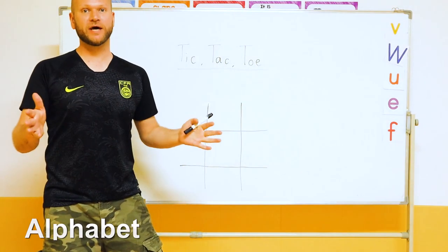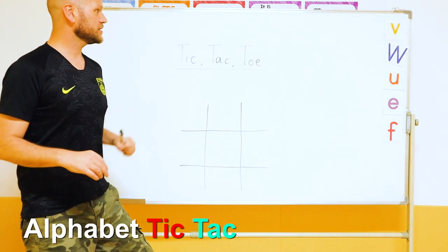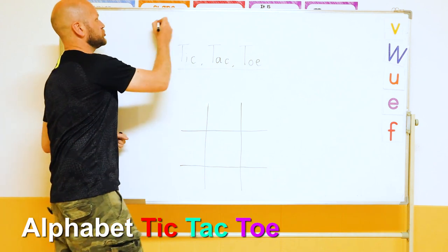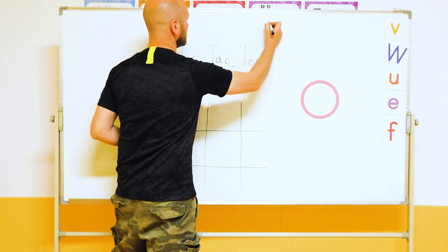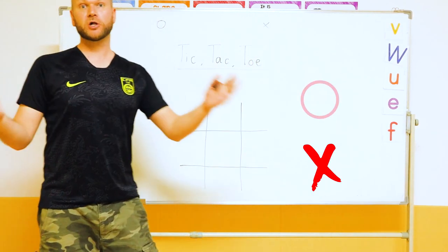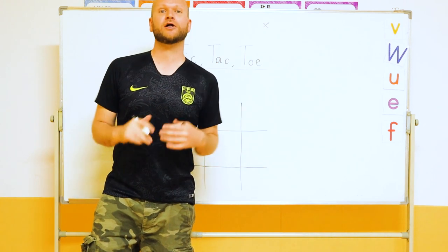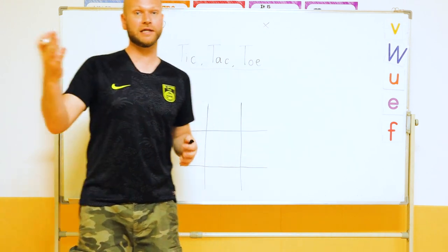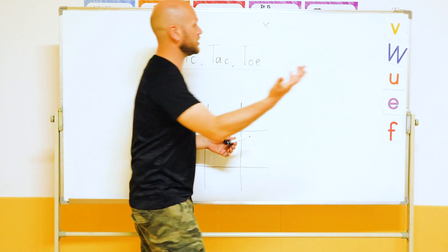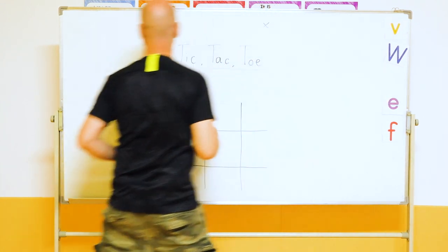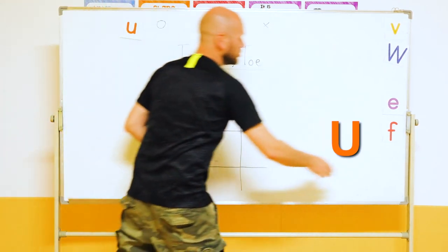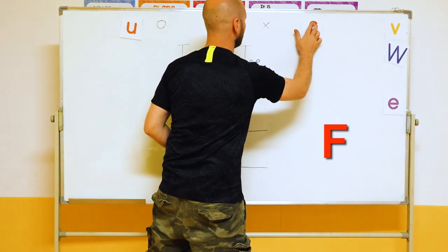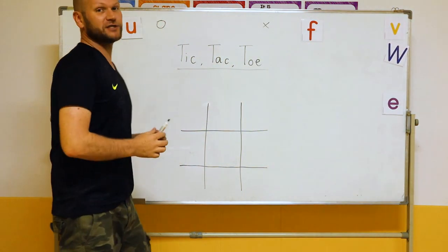This one guys we call alphabet tic-tac-toe. So instead of using your usual noughts and crosses, split your class into two teams. And allow each team to choose a letter. So here, for example, this team chooses U. These guys go for F.